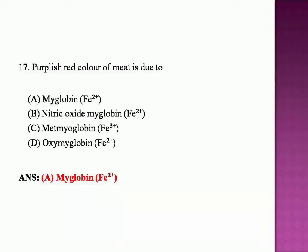Purplish red color of meat is due to: Myoglobin Fe2+, Nitric Oxide Myoglobin Fe2+, Met Myoglobin Fe3+, or Oxymyoglobin Fe2+? The answer is Myoglobin Fe2+.